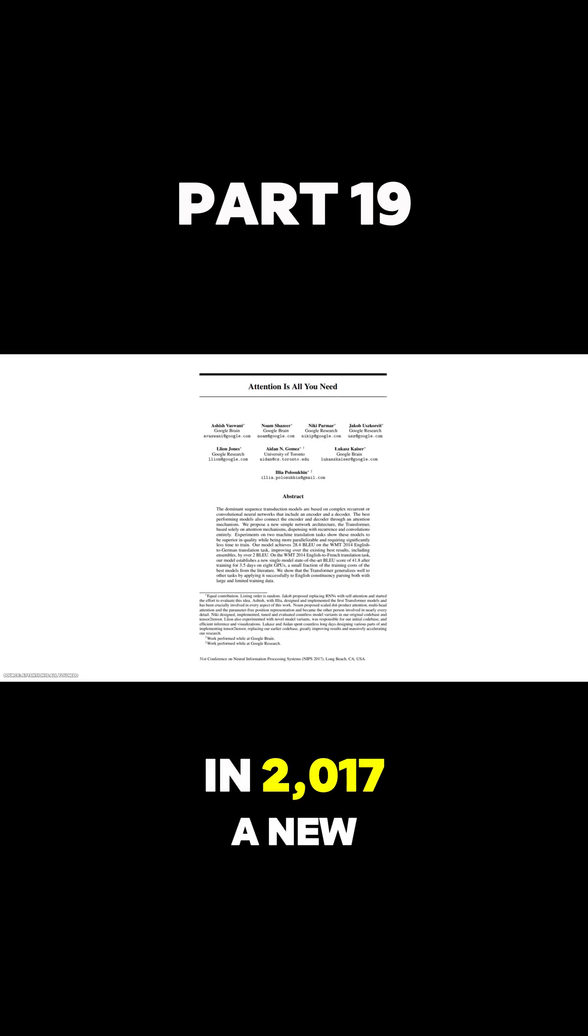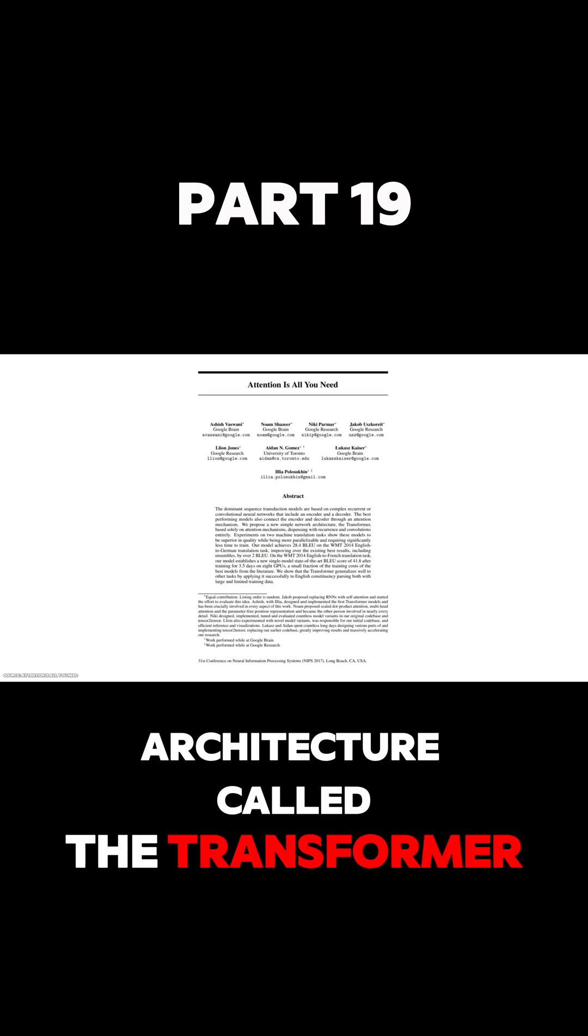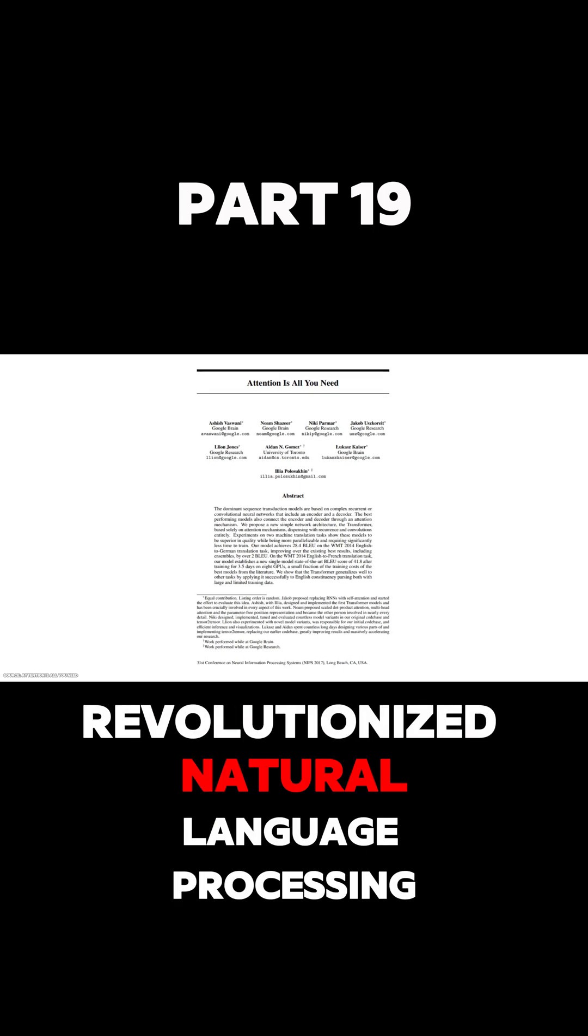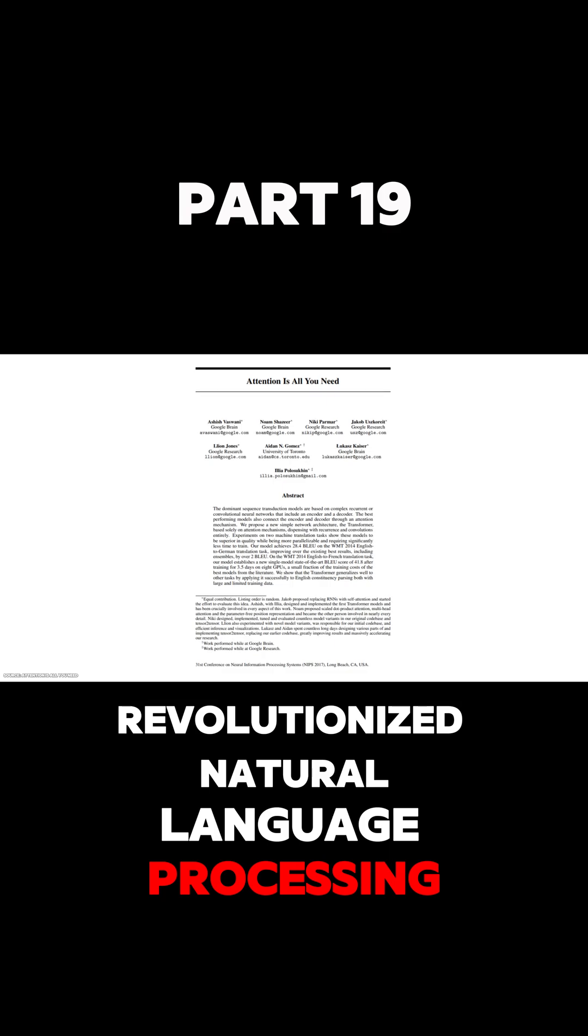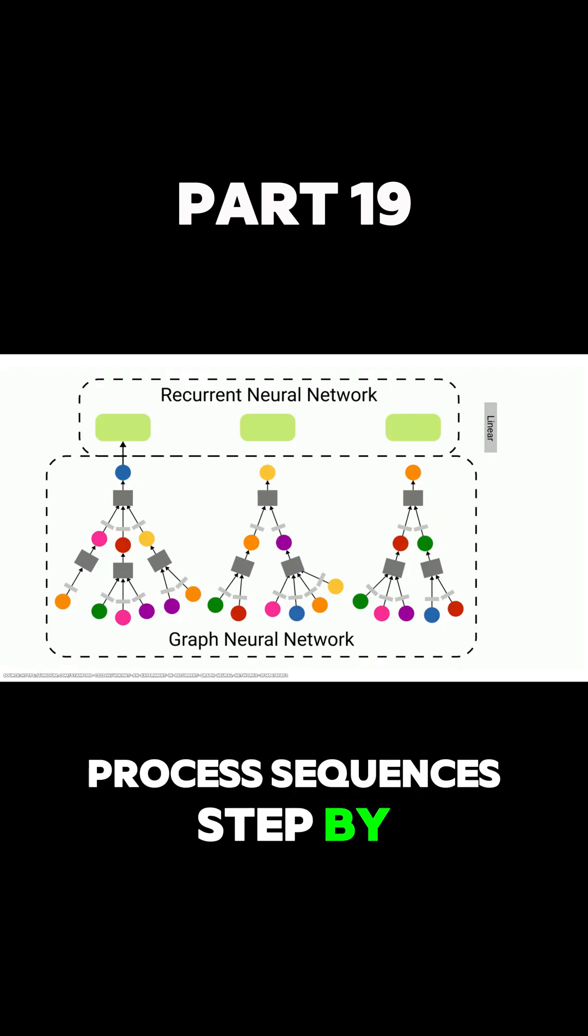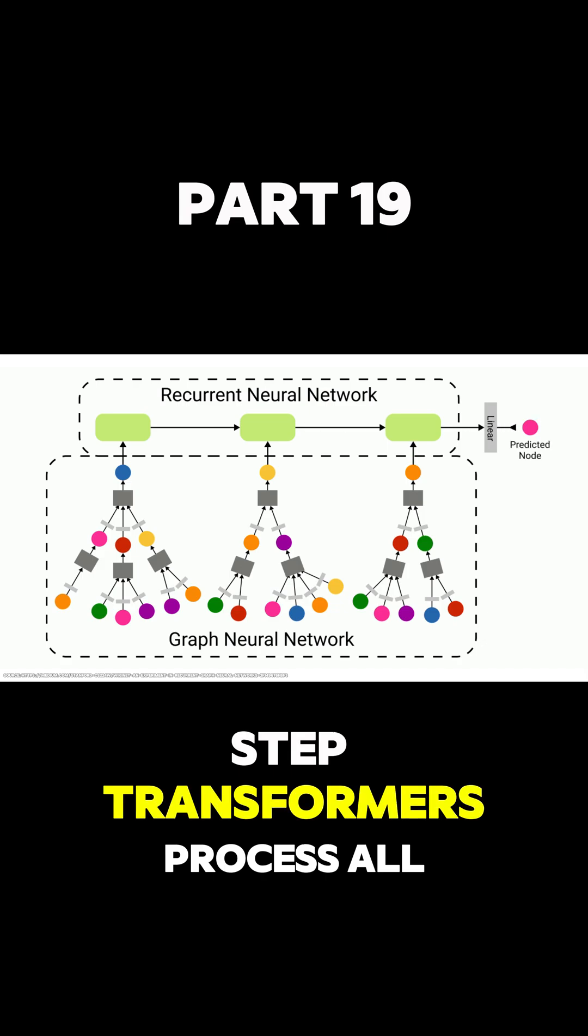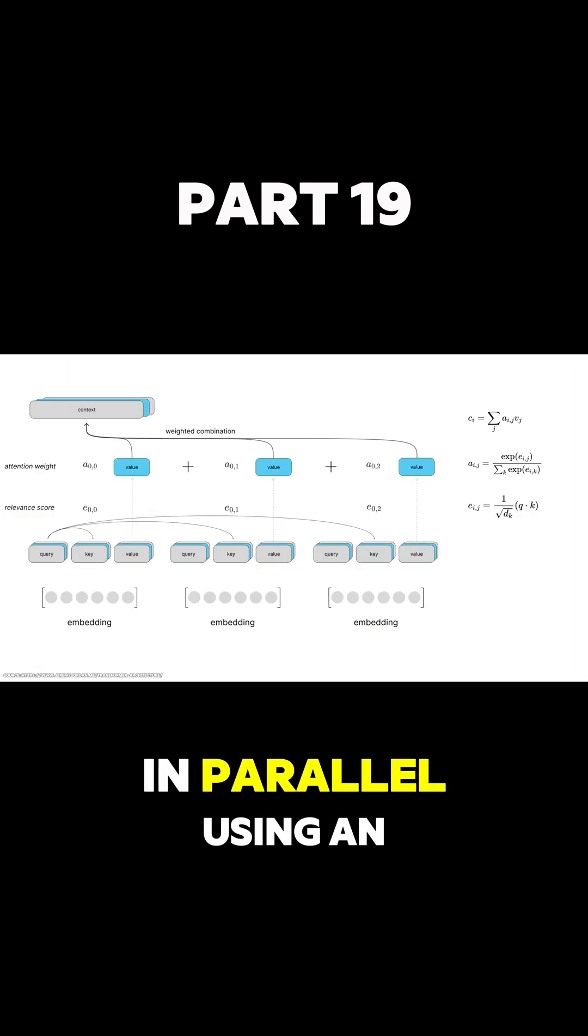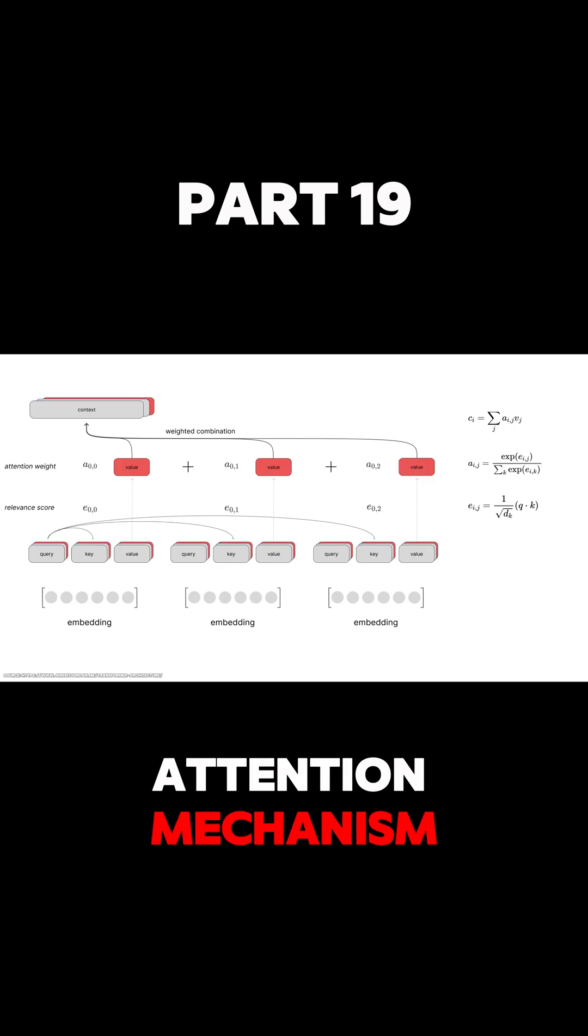In 2017, a new architecture called the transformer revolutionized natural language processing. Unlike recurrent networks, which process sequences step by step, transformers process all elements of a sequence in parallel using an attention mechanism.